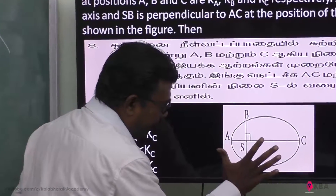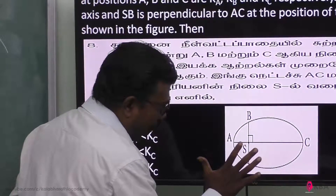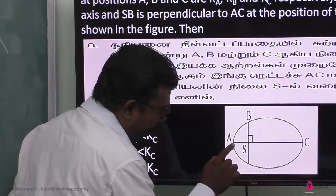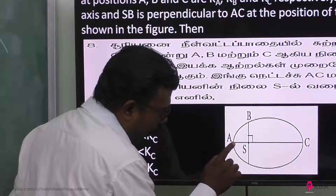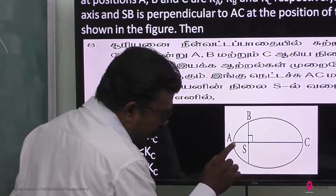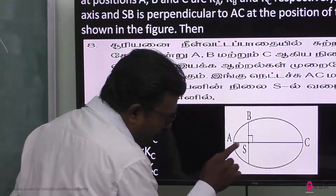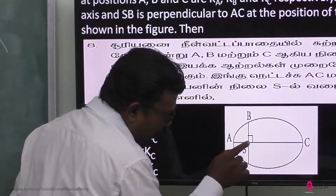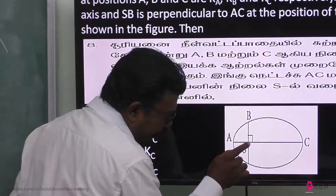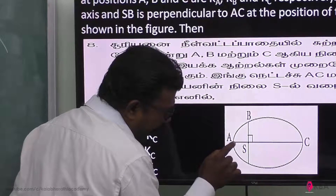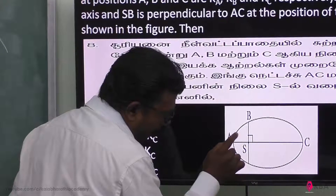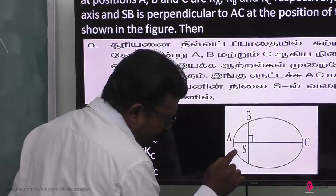Consider the situation: position A is the point which is closest to the sun. At that point, the planet is at its nearest distance, so its velocity will be the highest.